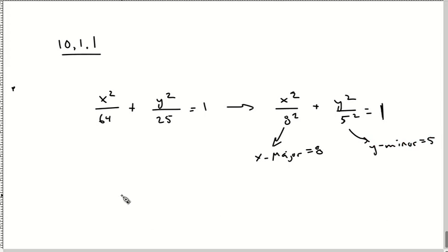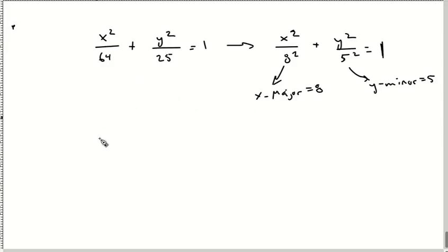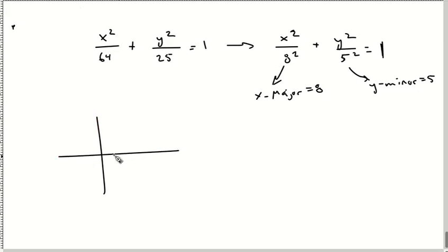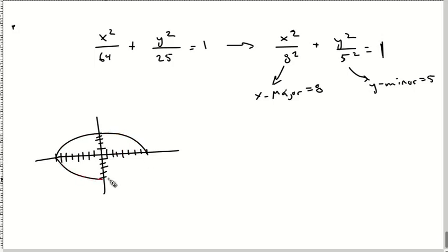Let me graph it and then we'll find the foci. I have an eight distance going out in both directions on the X, and a five distance up and down on the Y. There's my ellipse — I went up to five and it went out to eight. Done. Pretty easy.